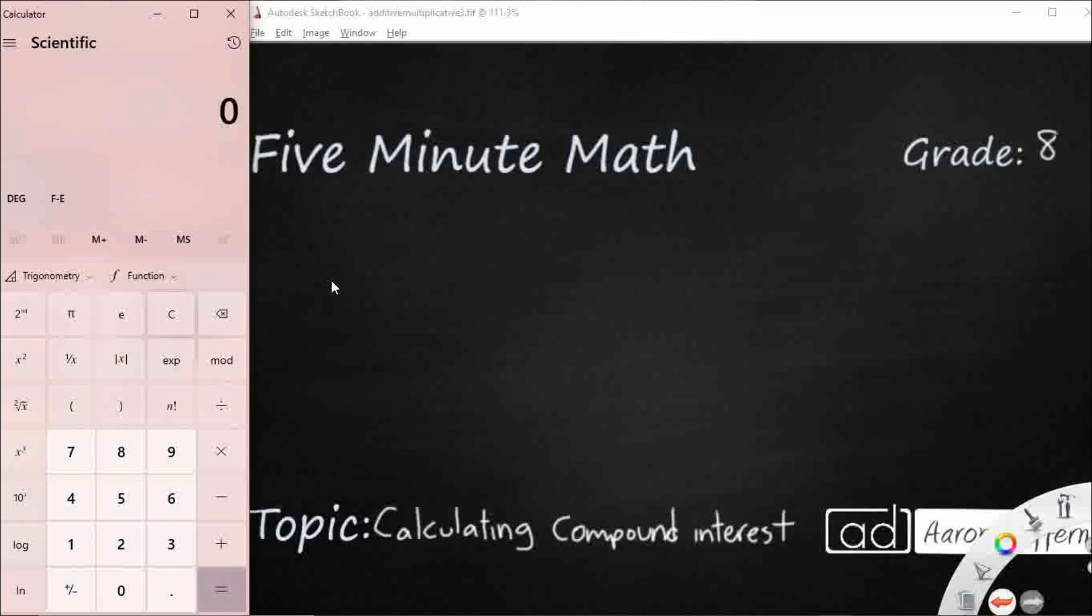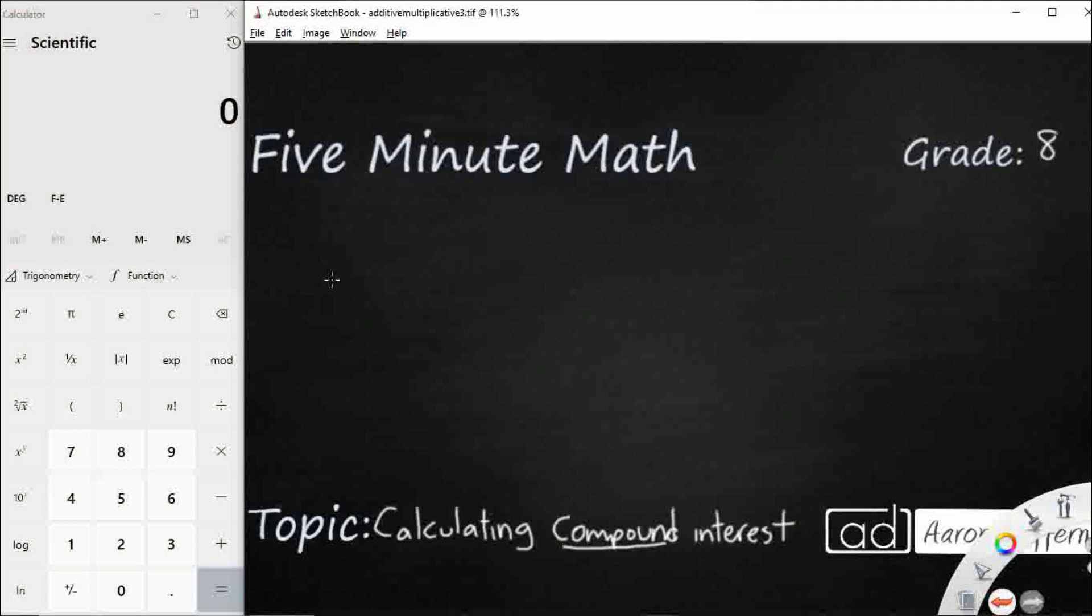So when we're looking at compound interest, we need to make sure that we're looking at compound rather than simple. It has a different formula. So our formula is going to be A equals principal, but then we've got parentheses here, 1 plus the rate. So we're going to take the rate, turn that from a percent into a decimal, add 1 to it, and then we're actually going to raise it to the t power. So that's where it gets a little bit interesting.